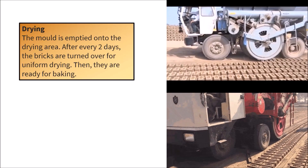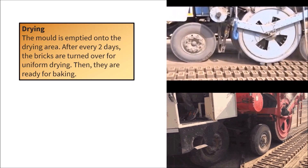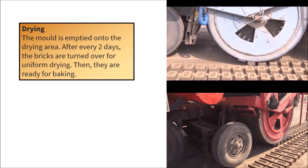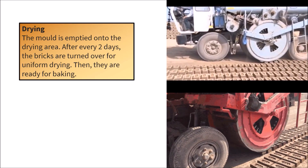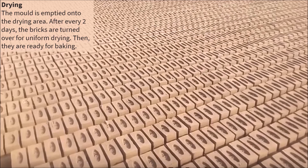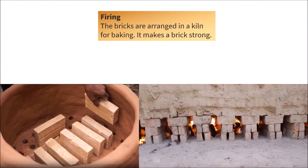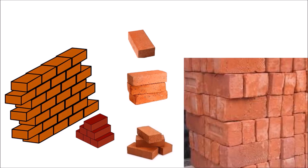4. Drying — the mold is emptied onto the drying area. After every two days, the bricks are turned over for uniform drying. Then they are ready for baking. 5. Piling — the bricks are arranged in a kiln for baking. This makes the bricks strong.